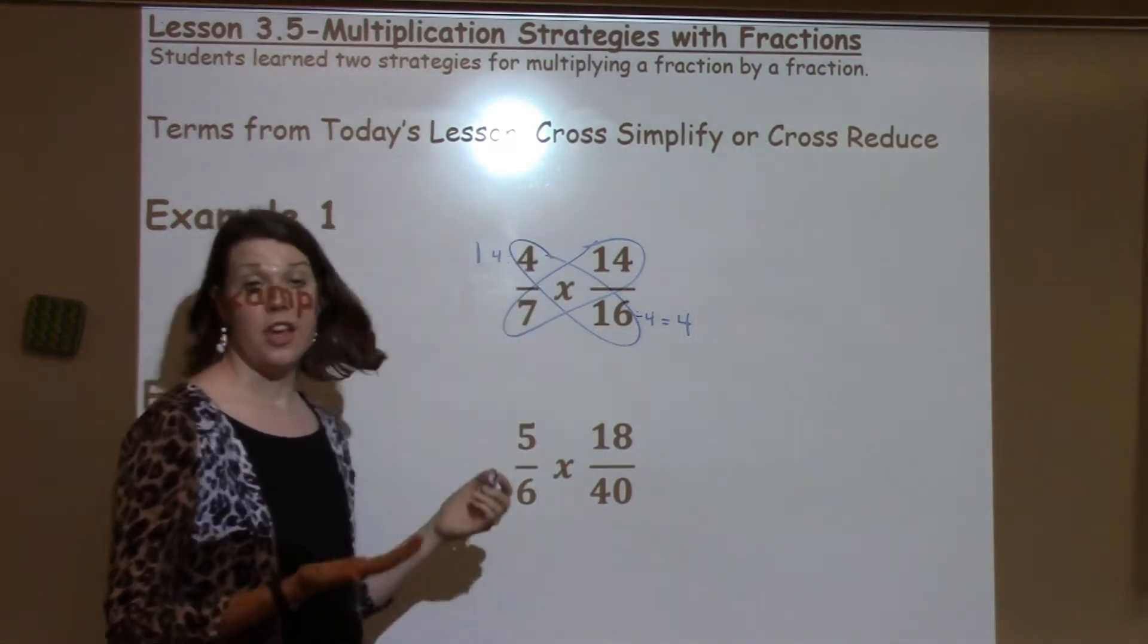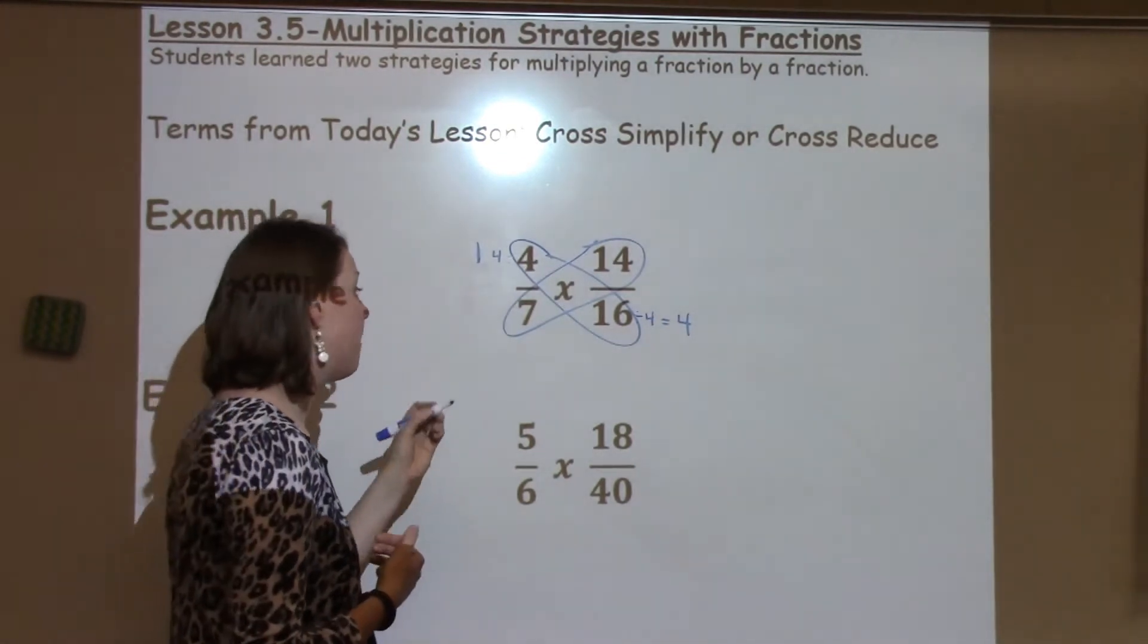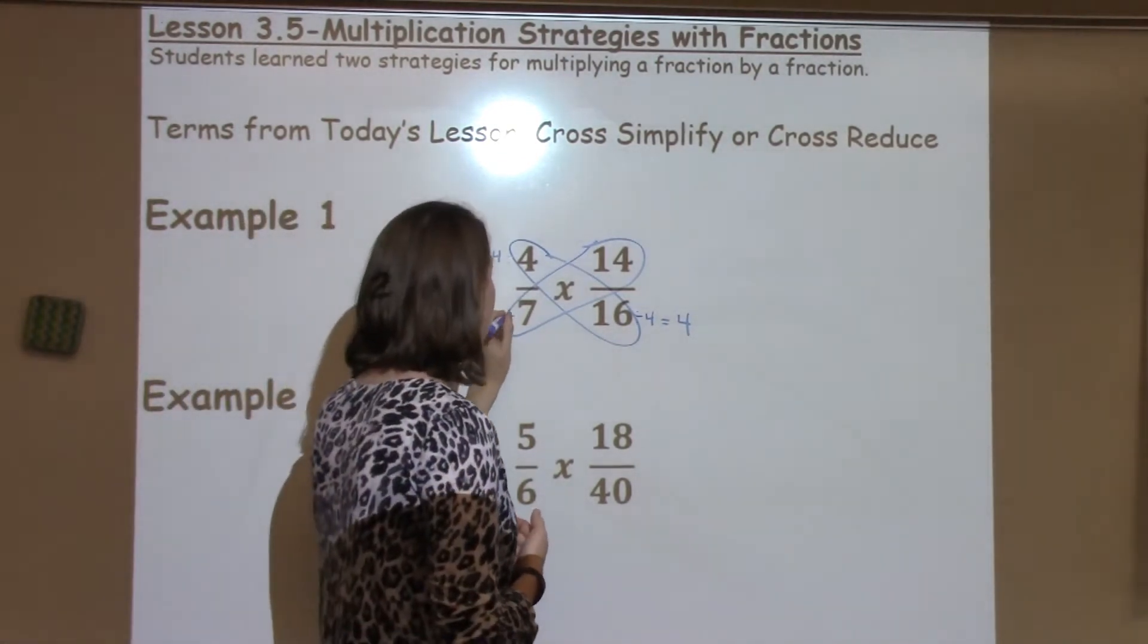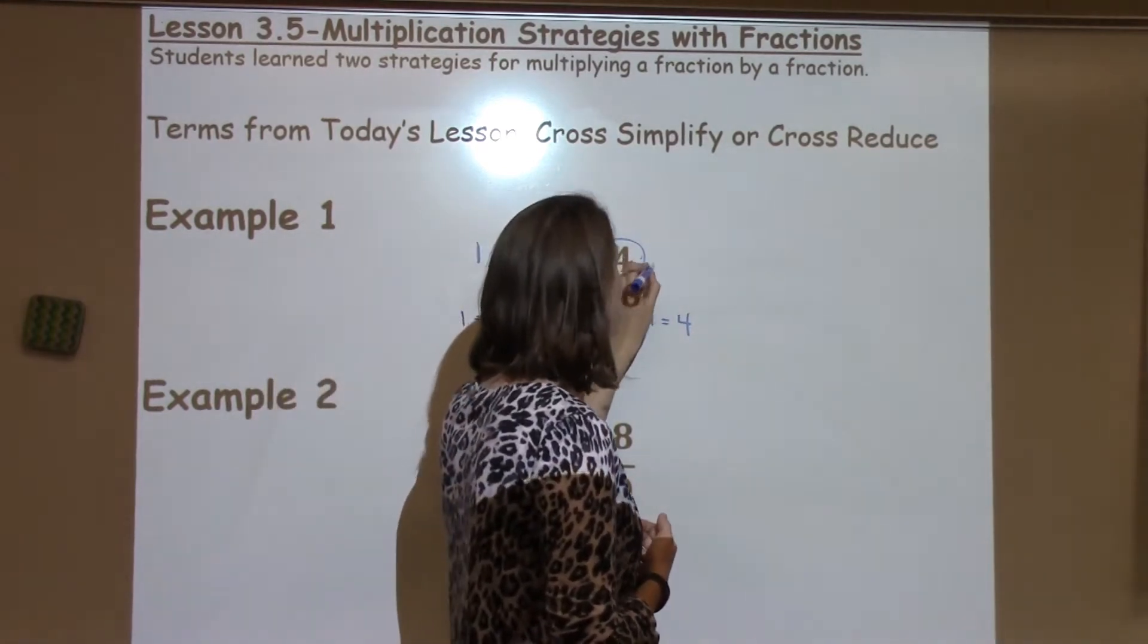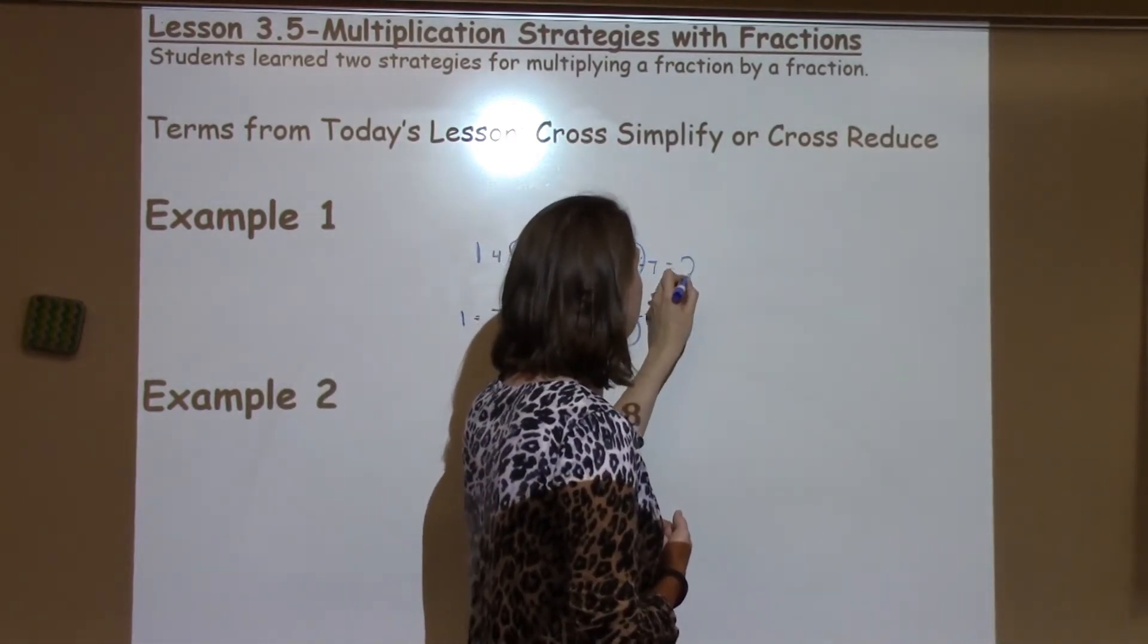When I look at the 7 and 14, do they share something? They share 7's. So I know 7 divided by 7 gives me 1, and 14 divided by 7 gives me 2.